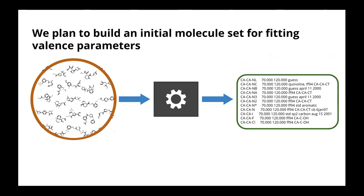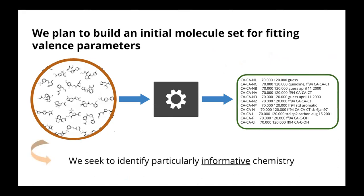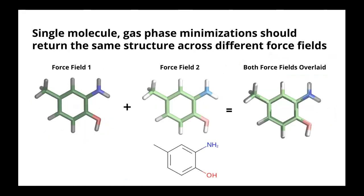As part of our G1 goals, we want to develop an initial molecule set in order to fit these force fields. If you put in a force field with only carbons, hydrogens, nitrogens, and oxygens, you can't expect to use it to simulate something with sulfur or phosphorus. This project is not focused on the black box parameterization scheme, but on what molecules we want to build to develop this new force field. We want to focus on identifying particularly informative chemistry — geometry structures that are not consistently represented by different force fields.